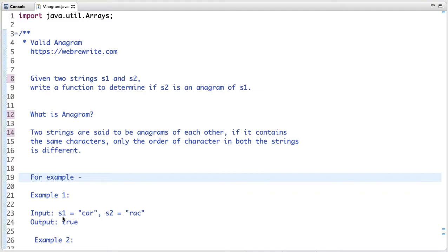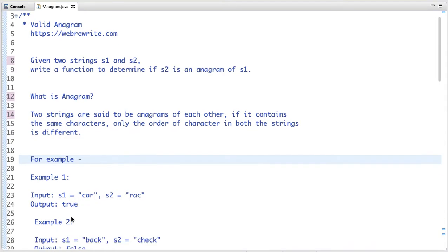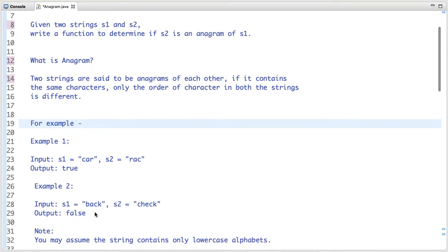For example, in example one, s1 and s2 both contain the same characters, only the order of characters in both strings is different, so s2 is an anagram of s1.